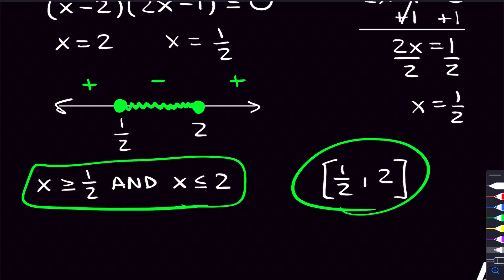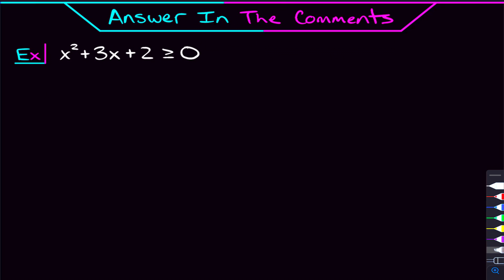And that is it for the last problem on quadratic inequalities. Hopefully this has got you feeling much better with quadratic inequalities. Here's a problem for you to try and answer in the comments: x squared plus three x plus two is greater than or equal to zero. I know you can't put a number line in the comments, so just put your answer in interval notation — it's a pretty quick problem, so try it out. And remember, I do have that extra video linked in the description where you and I will go through and solve 10 more of these quadratic inequalities.